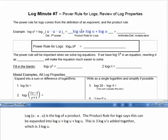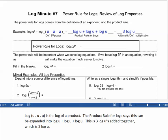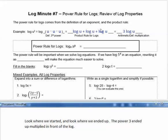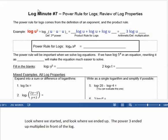This is three log u's added together, which is three times log of u. Now look back at this string — look at where we started: log of u cubed. And look at where we ended up: three log of u.